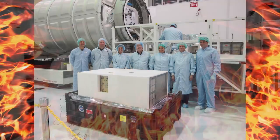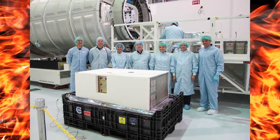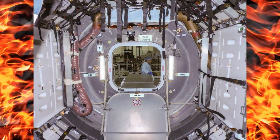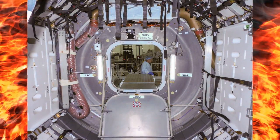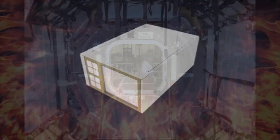Ross Miller, the external integration and operations lead here at Glenn for SAFFIRE-1, joins me now. Ross, this is really a large unit to go on a rocket. Yes Lori, this is actually the largest payload that can fit inside a Cygnus vehicle - it just barely fits through the hatch. Tell us what, other than the samples, is inside of here that makes this all work?